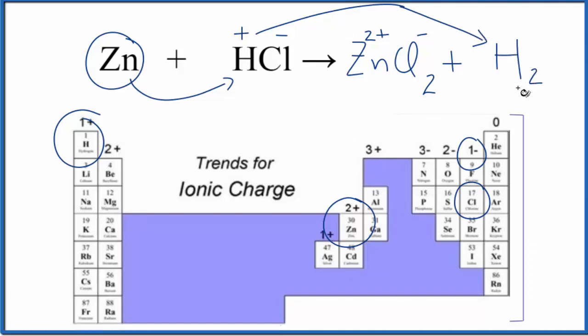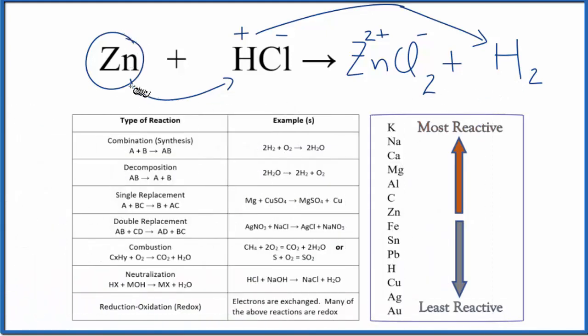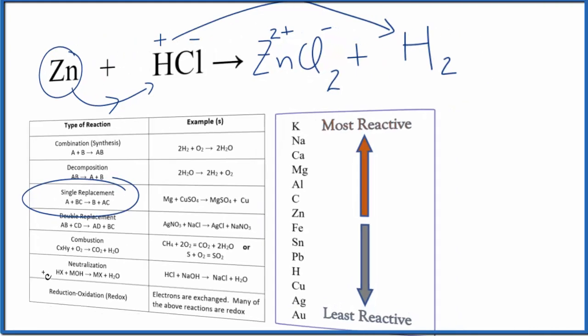So that gives us the reaction here. This is our single displacement reaction where zinc comes in, pushes the hydrogen out. Now the hydrogen's here and the zinc is with our chlorine. The zinc is bonded to the chlorine. Single replacement reaction.